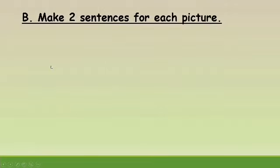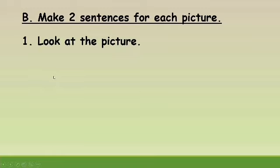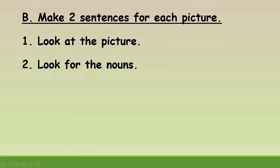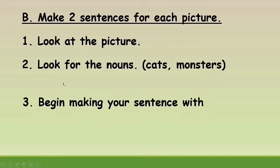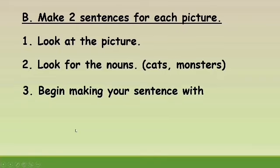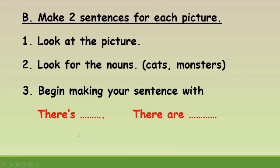Second practice: make two sentences for each picture. First, look at the picture, then look for the nouns — for example, cats and monsters. Then begin making your sentence with 'there's' or 'there are'.